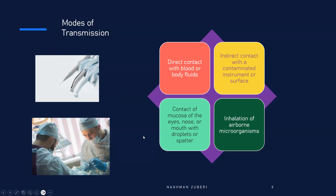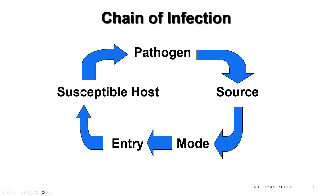If we look at the modes of transmission in the dental office, there could be direct contact with blood or body fluids, indirect contact with a contaminated instrument or surface, contact of mucosa of the eyes, nose or mouth with droplets or spatter, and inhalation of airborne microorganisms. This is the chain of infection: from the source through a mode to the host — the pathogen flourishes in the body of that host, that host becomes the source, and the chain continues.